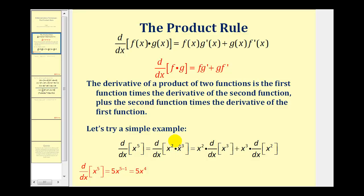So if we applied the product rule in this form, we'd have the first function, which is x squared, times the derivative of the second function, which is x to the third, plus the second function, which is x to the third, times the derivative of the first function, which would be the derivative of x squared.